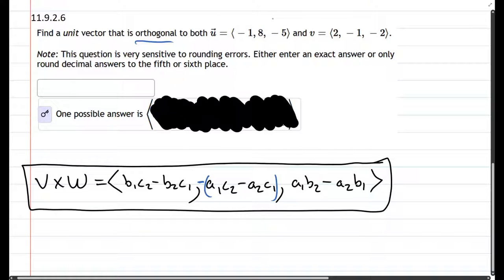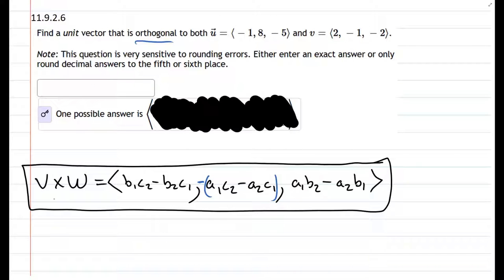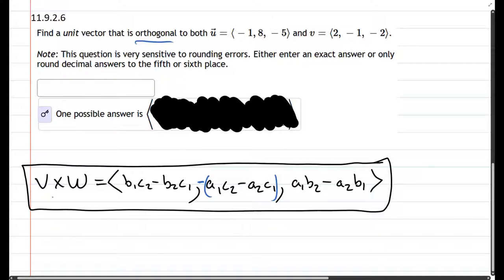Which means we can take their cross product. Their cross product is always going to be orthogonal to the original vectors, and then the last part we're gonna do is make it a unit vector.